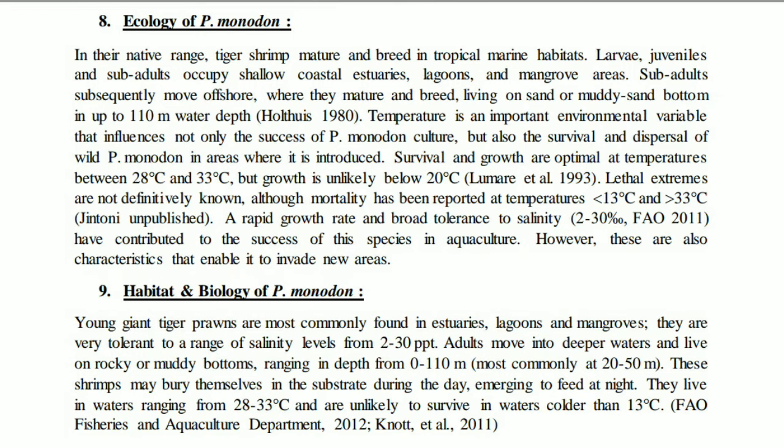In their native range, tiger shrimp mature and breed in tropical marine habitats. Larvae, juveniles, and sub-adults occupy shallow coastal estuaries, lagoons, and mangrove areas. Sub-adults subsequently move offshore where they mature and live on sandy or muddy sand bottoms at up to 110 meters water depth. Penaeus monodon species are used to breeding in tropical marine habitats — larvae and juveniles are found in estuaries, shallow coastal areas, and mangrove areas.